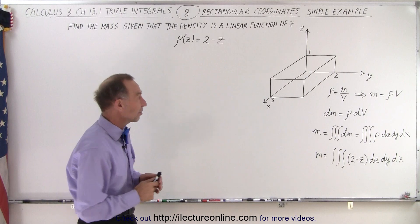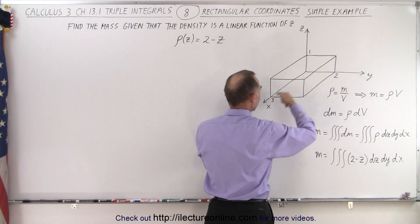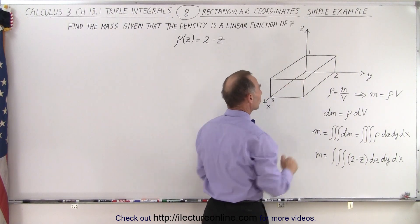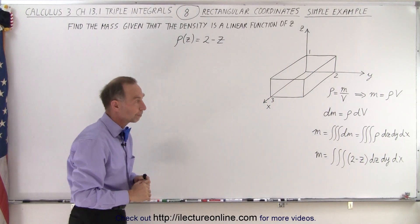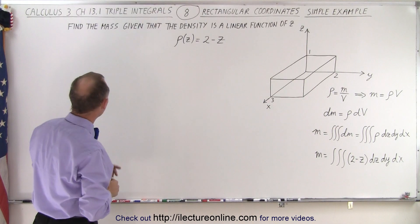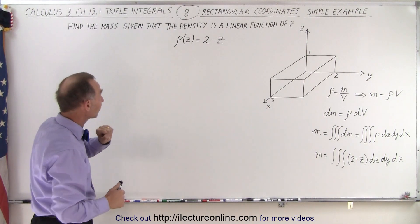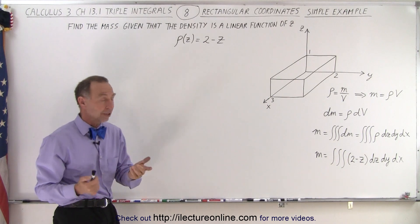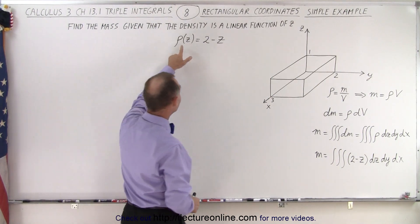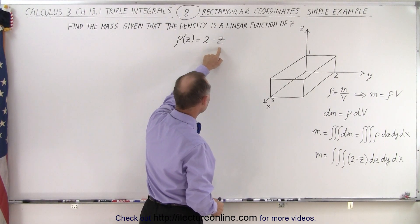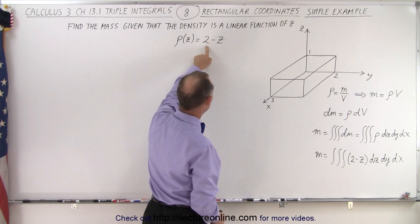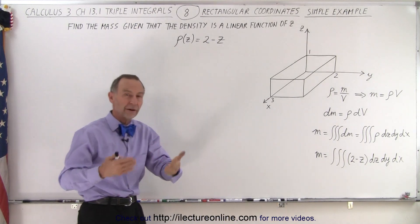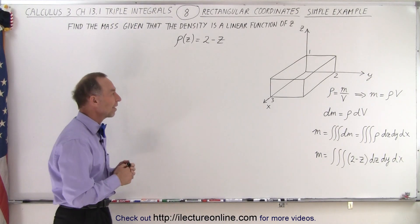So here what we have is a cube. In the x direction, the length is 3, the width in the y direction is 2, and the height in the z direction is equal to 1 unit. And we're trying to find the mass of that object, given that the density is a linear function of z. The linear function is as follows: the density is equal to 2 minus z. So when z is equal to 0, the density is 2. When z equals 1, the density is 1. So the density varies from 2 to 1 in a linear fashion.